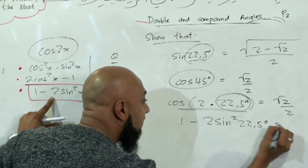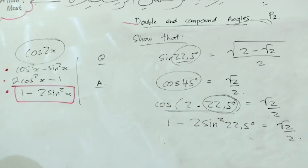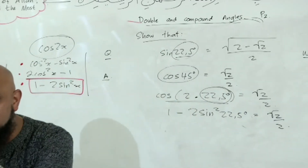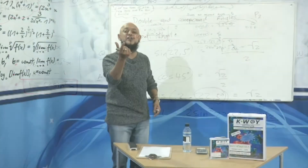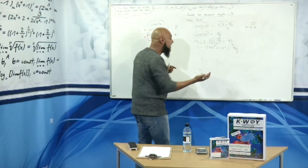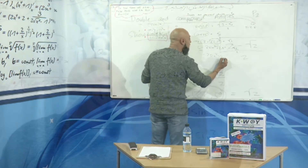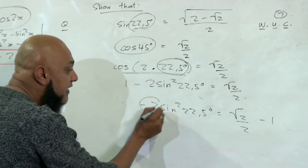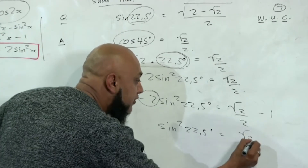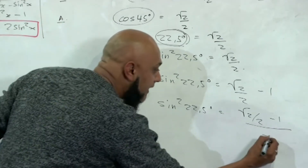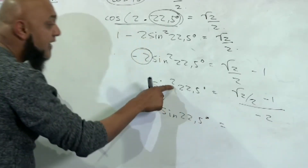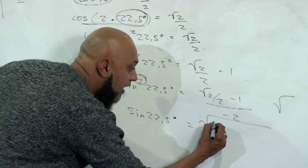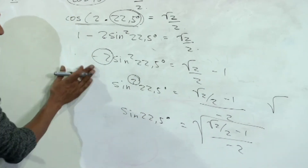So: 1 − 2sin²(22.5°) = √2/2. Unlike the previous attempt, we have no cosine left — everything is in terms of sine. Now we make sin(22.5°) the subject. Rearranging: −2sin²(22.5°) = √2/2 − 1. Dividing both sides by −2: sin²(22.5°) = (√2/2 − 1) ÷ (−2). Taking the square root of both sides: sin(22.5°) = √[(√2/2 − 1) / (−2)].